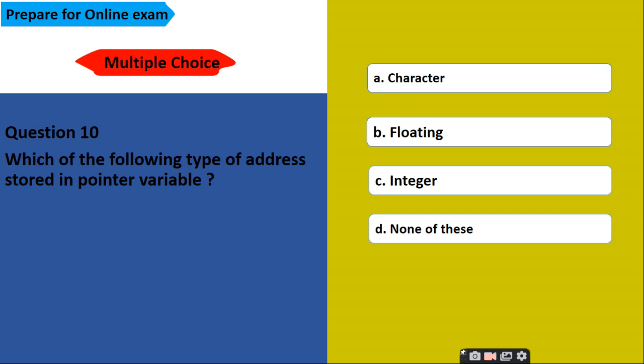Which of the following type of address is stored in a pointer variable? When you are storing the pointer variable, which type of value, address stored inside it? Character, floating, integer, or none of these? And correct answer is D, integer. Because it is storing the address of something and address can't be a character or floating. So correct answer is D, integer.